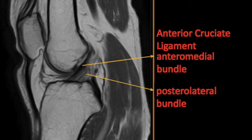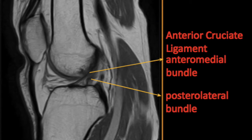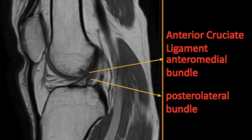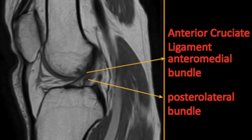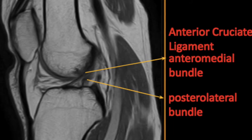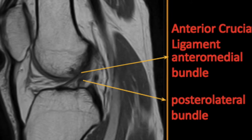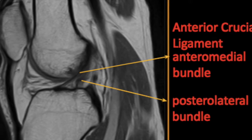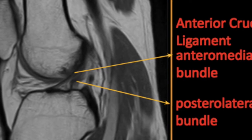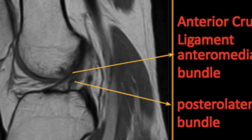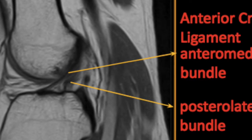The ACL is a two-bundle ligament with a small anteromedial and a larger posterolateral bundle. It is the primary restraint to anterior tibial displacement, with the posterolateral bundle providing the principal resistance to hyperextension forces.